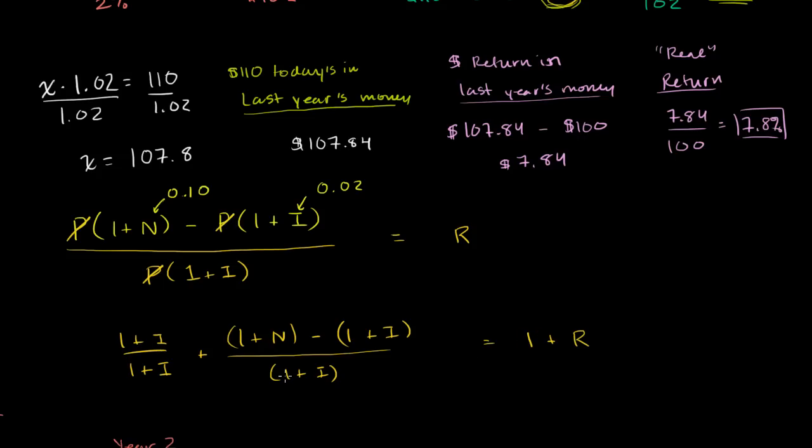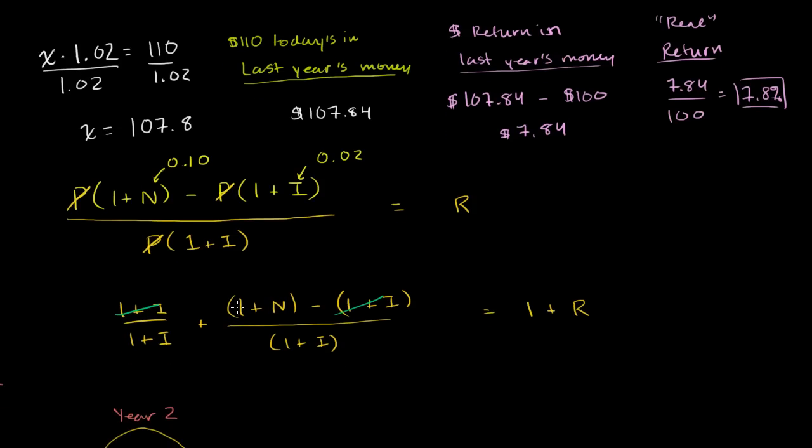We have the same denominator here. If I add the numerators, 1 plus i plus 1 plus n minus 1 plus i, so this and this are going to cancel out. And we're going to be left with, in the numerator, we're just left with 1 plus the nominal interest rate. In the denominator, we just have 1 plus the rate of inflation is equal to 1 plus the real interest rate.